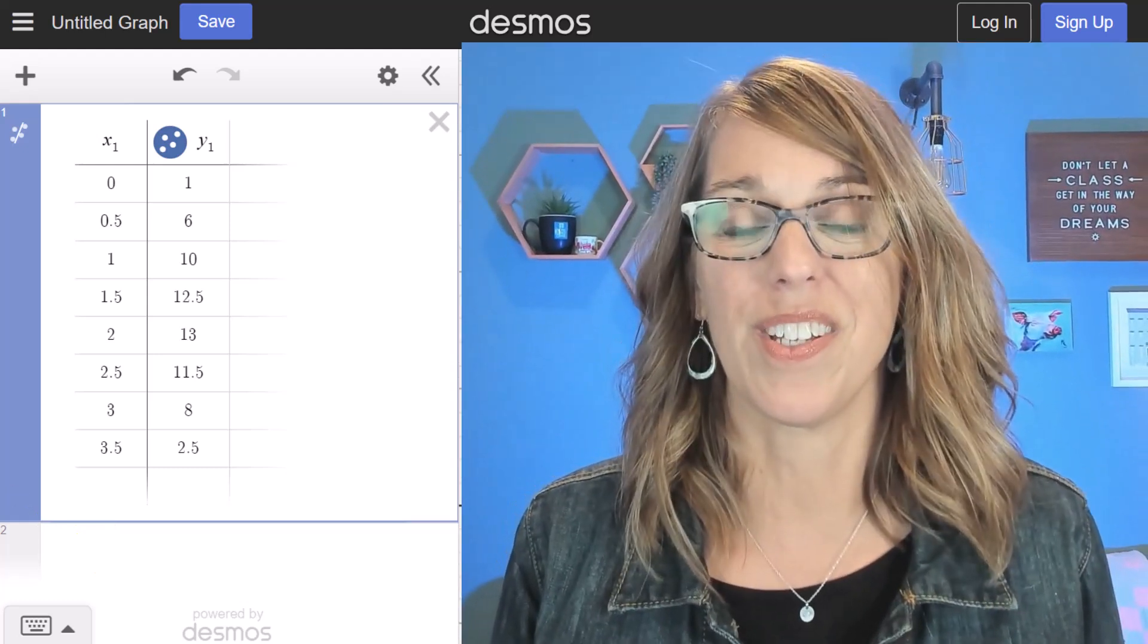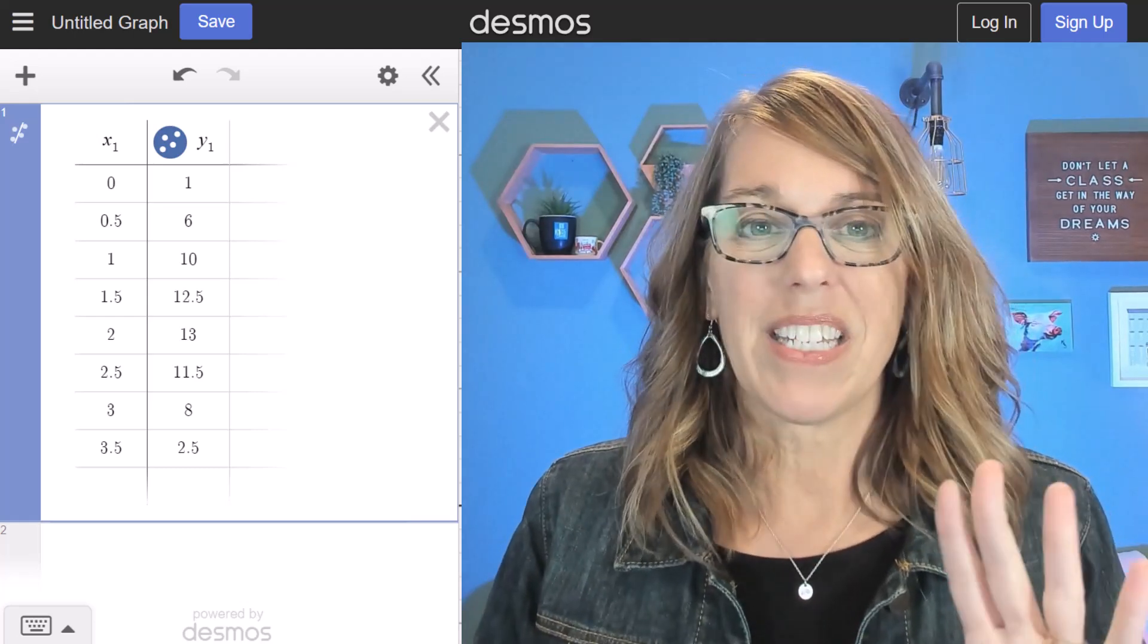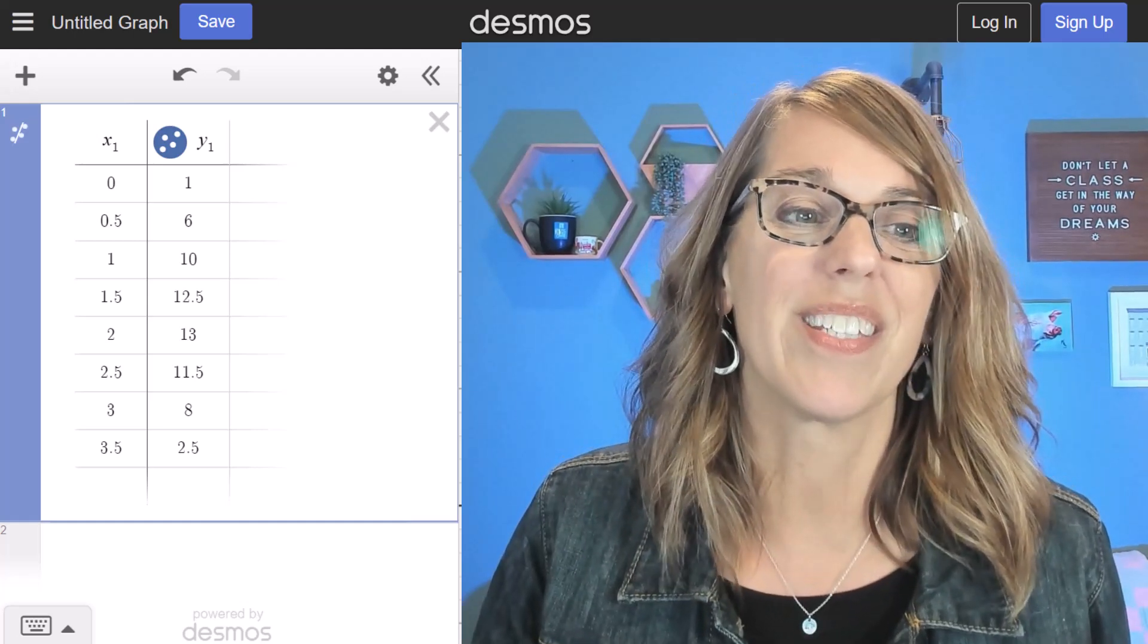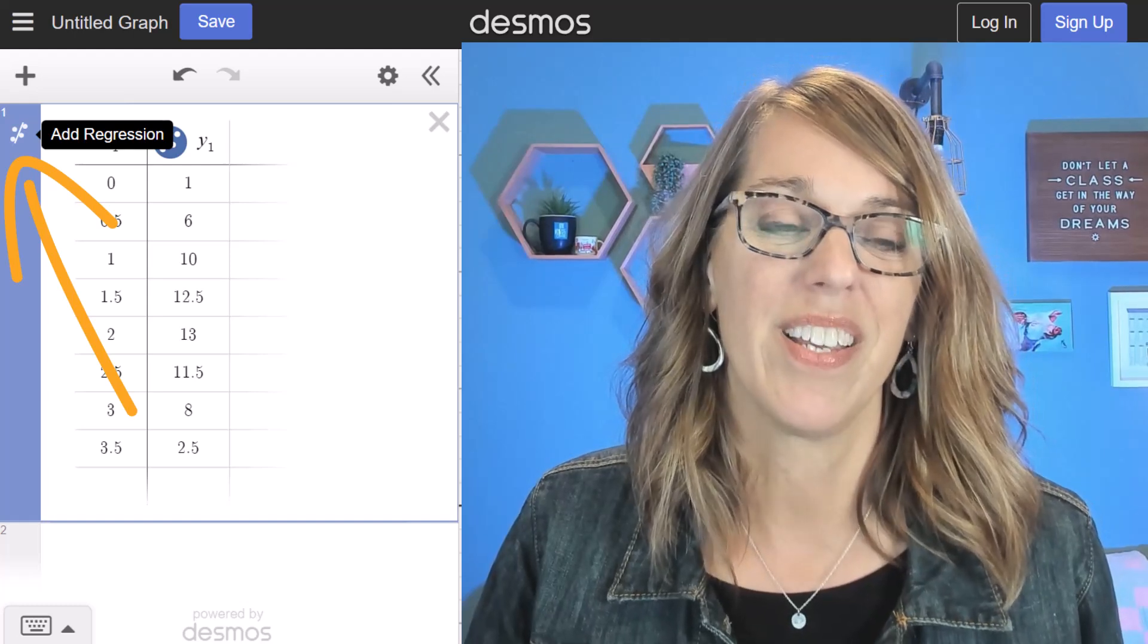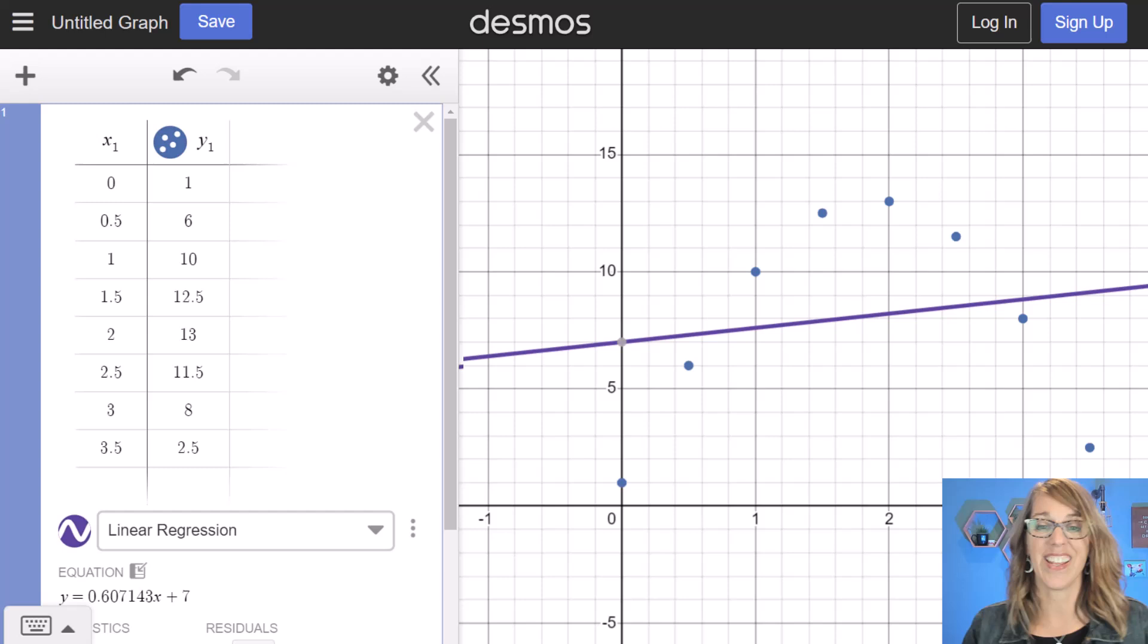But what we really want to do is to match a curve to model this data. Desmos has made this super easy. All you have to do is to look for this symbol in the upper left-hand corner. This is the regression symbol. So if you hover on it, it says add regression. If you click on it, it adds its guess at a regression and it always defaults to linear.